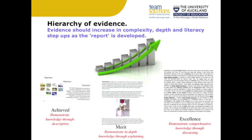When supporting students' report writing, it's really important to consider that evidence should increase in complexity, depth, and following the literacy step-ups as the report is developed. For example, the wording in the Achievement Standard states that for achieved, students must demonstrate understanding through describing certain elements. For merit, students must demonstrate in-depth knowledge by explaining certain elements. And for excellence, students must demonstrate comprehensive knowledge through discussing certain elements. It's really important to unpack what these might look like.